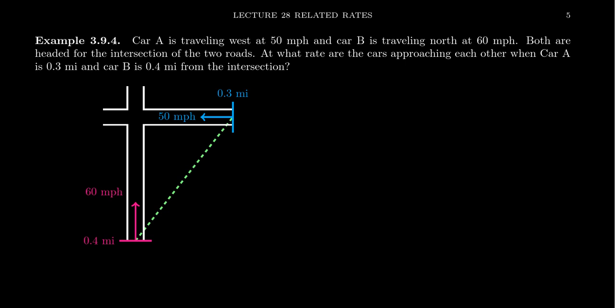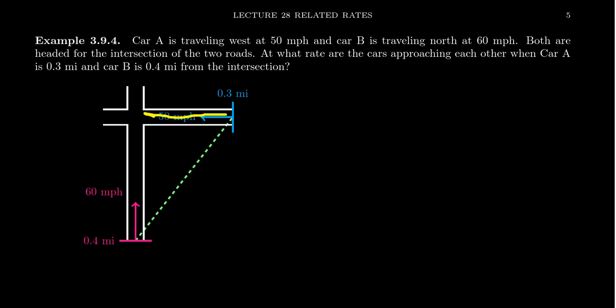Imagine we have two cars traveling to some common destination. Car A is traveling westbound at 50 miles per hour, and car B is traveling northbound at 60 miles per hour. Both are headed for the intersection of two roads — a north-south road and an east-west road. We're asking at what rate the cars are approaching each other when car A is 0.3 miles away and car B is 0.4 miles away from the intersection.